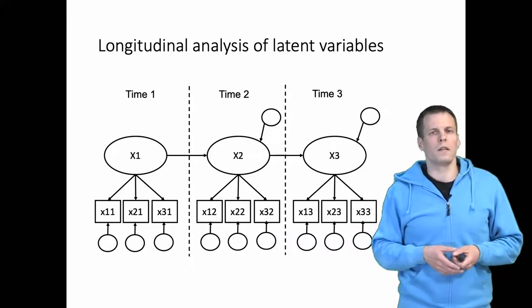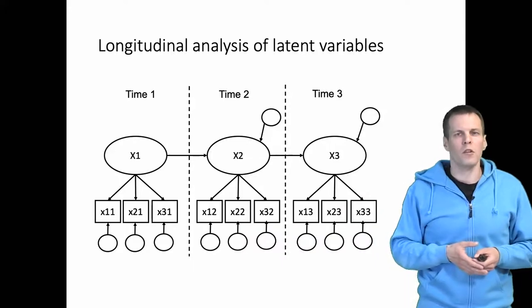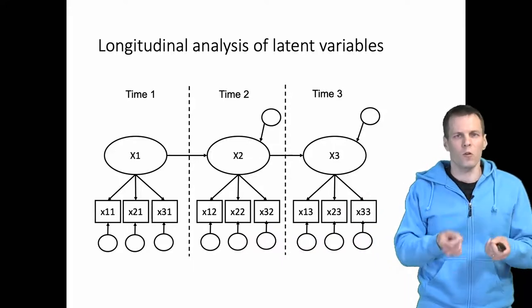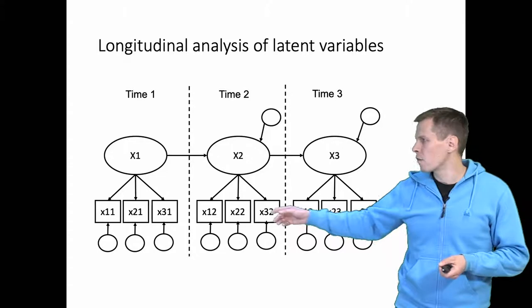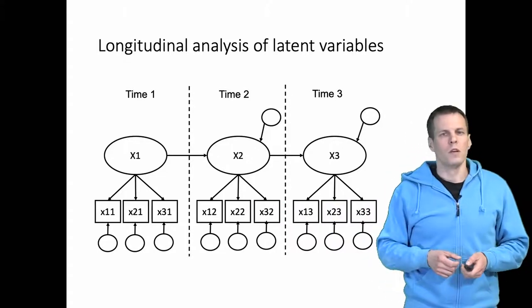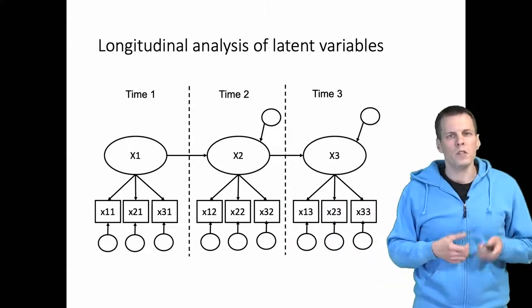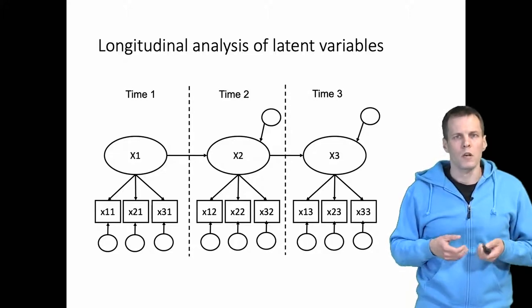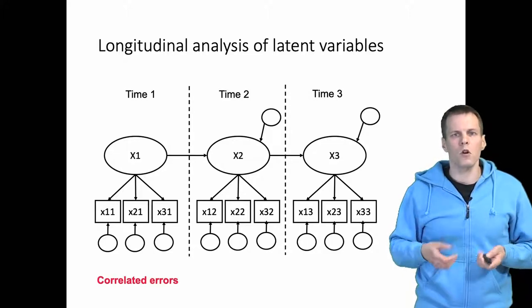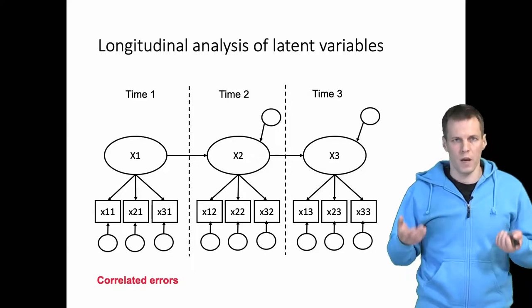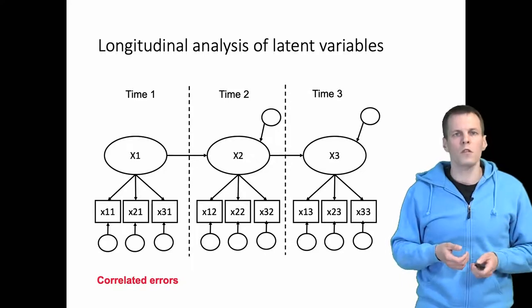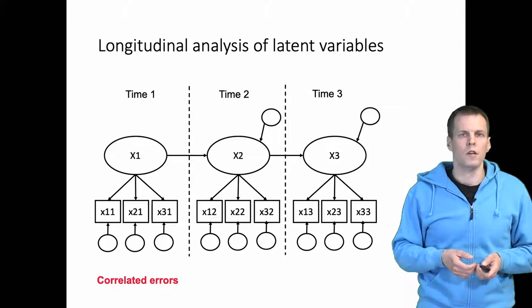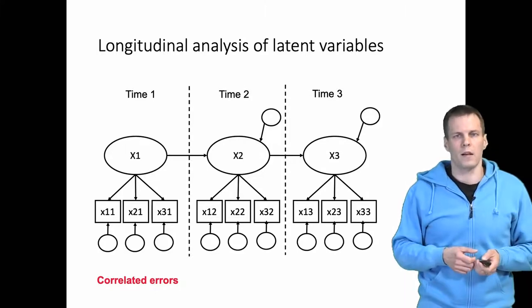So there might be something in the first indicator that is persistent over time that is different from the second indicator. So quite often, we want to say that the first indicator's uniqueness correlates over time. So we have these correlations over time of these measurement errors. That is the first special thing that you need to consider when you do longitudinal analysis of latent variables.